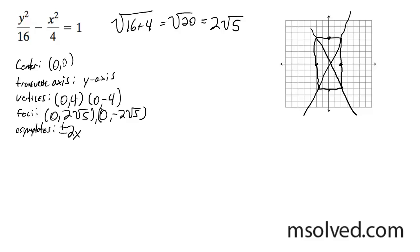The vertices are at 0, 4, 0, negative 4, because that's the square root of 16. The foci is going to be the square root of 16 plus 4, square root of 20, which factors down to 2 root 5.